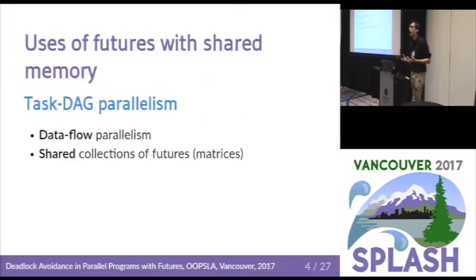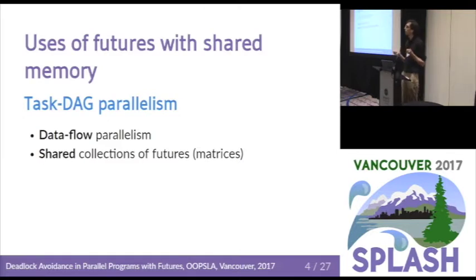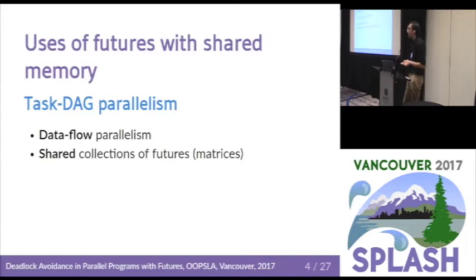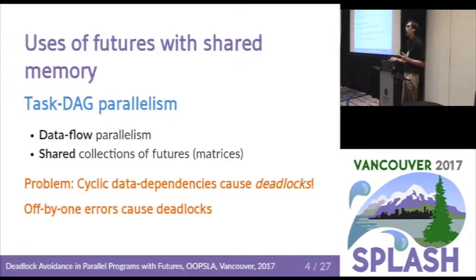In the end, what you have when writing these parallel programs is a graph of tasks and data — it's kind of like a dataflow feel where you're making explicit both the parallel execution and the data dependencies. In these parallel programs it's possible to have matrices or arrays of futures, and in that situation the problem is that an off-by-one error will introduce a cycle in your graph of tasks, and that introduces a deadlock.